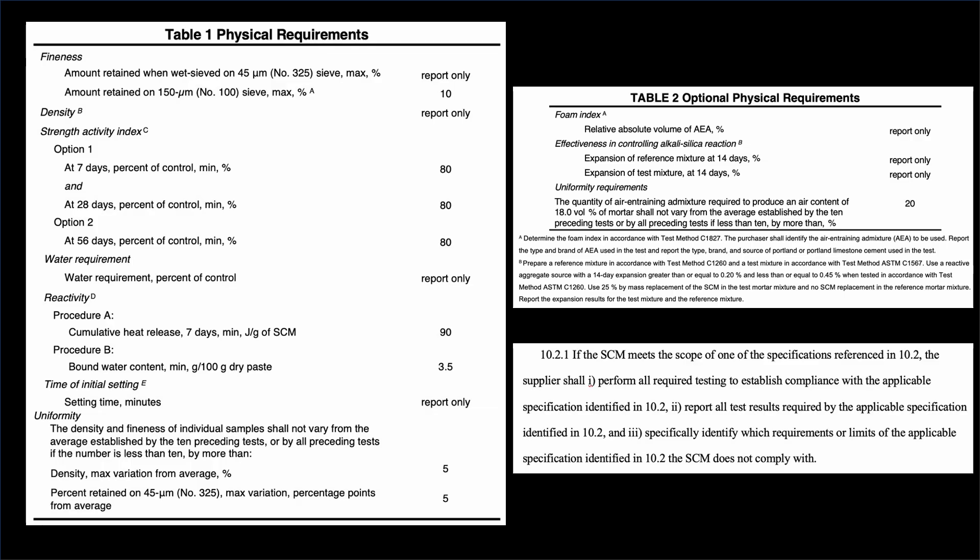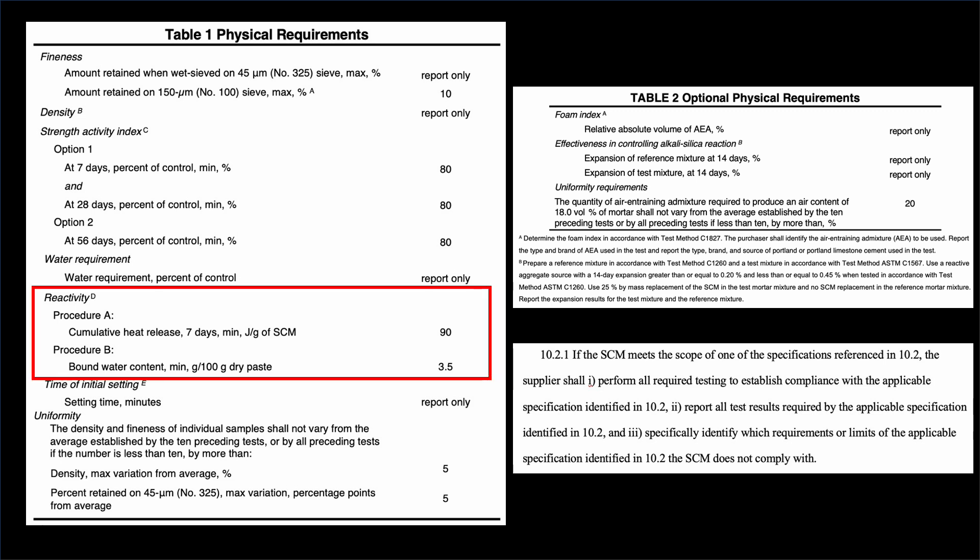This slide shows basically the heart of this specification. You can see the reactivity tests — Procedure A and Procedure B, the R3 tests — and we specify limits for those. That is one factor where we have set limits within this performance spec that need to be met.